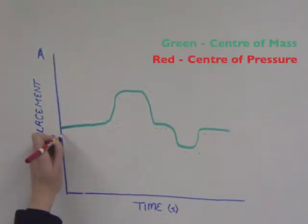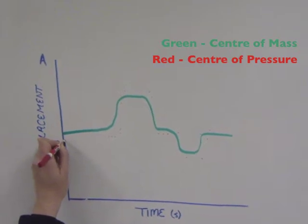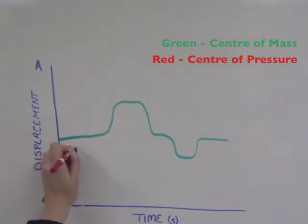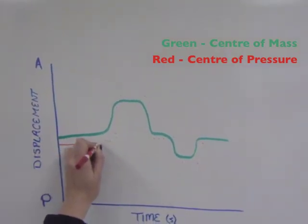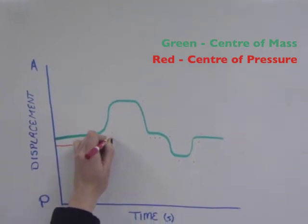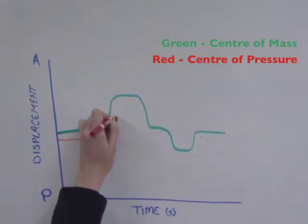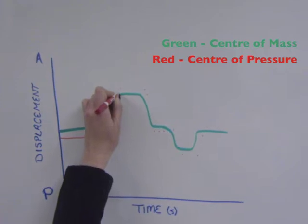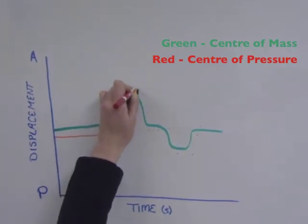The centre of mass is the stimulus that causes the centre of pressure to react. The centre of mass is constantly moving due to different muscles and biological processes working at any one time. Since only the centre of pressure can be controlled, it responds to whatever the centre of mass does.